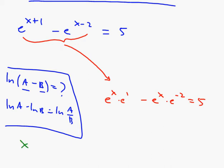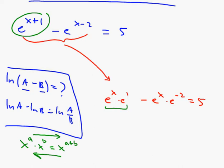A long time ago, you learned that x to the a times x to the b — you could add the exponents because the bases were the same. You can always go backwards with that rule. So e to the x times e to the 1 gives e to the x plus 1, and e to the x times e to the negative 2 gives e to the x minus 2. So this really is the same equation.